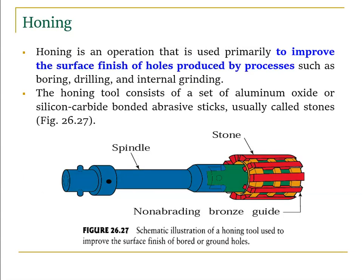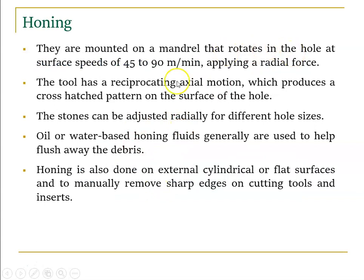The second process is honing. Honing is used to produce a good surface finish for internal surfaces or holes. It is primarily used to improve the surface finish of holes produced by boring, drilling, and internal grinding. The honing tool consists of a set of aluminium oxide or silicon carbide bonded abrasive sticks called stones, mounted on a mandrel connected to a spindle. The tool rotates in the hole at a surface speed of 45 to 90 meters per minute. By applying radial force, the tool has a reciprocating axial motion that produces a cross-hatched pattern.